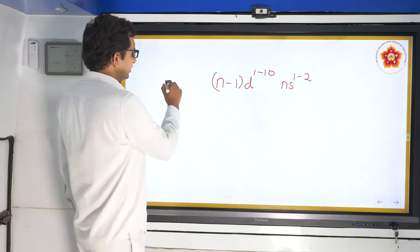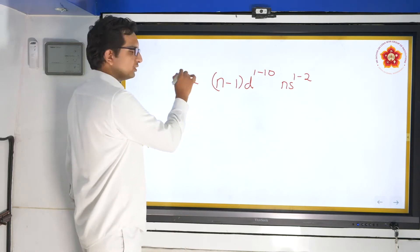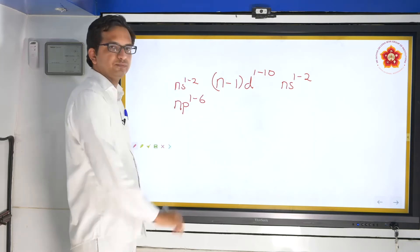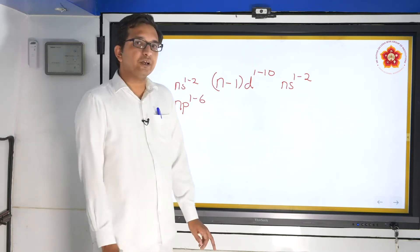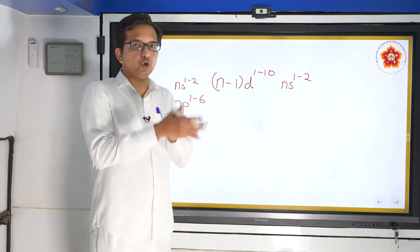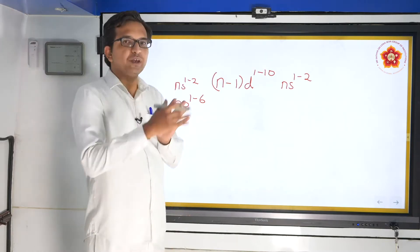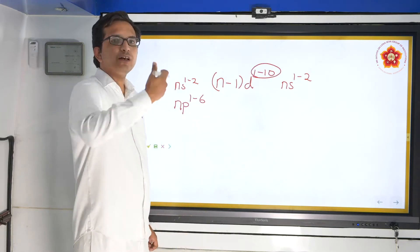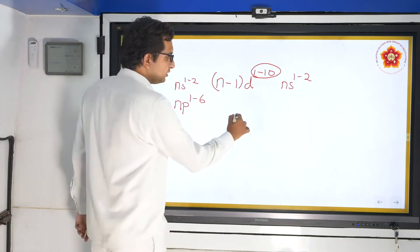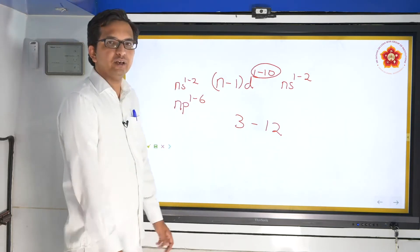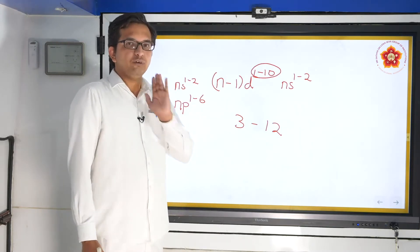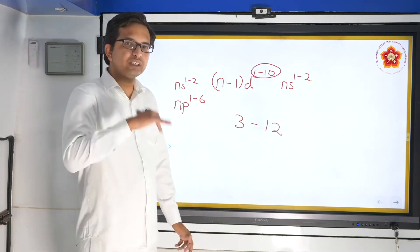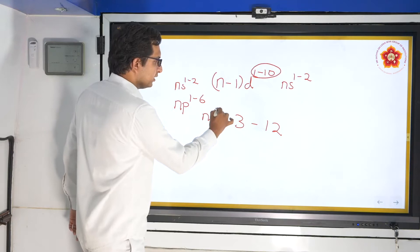What is this? Whenever we write for s orbitals, we write it as ns¹⁻², which has been already studied in first year. For p-block, we write it as np¹⁻⁶. In the periodic table, there are two groups of s and six groups of p. The notation 1 to 10 for d indicates that there are in total 10 groups of d orbitals, present between the third and twelfth groups.